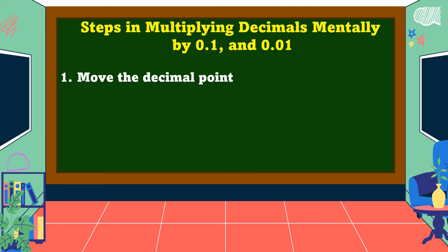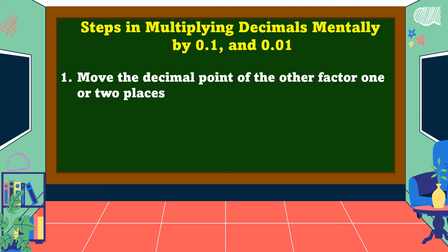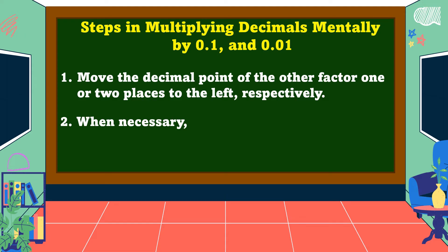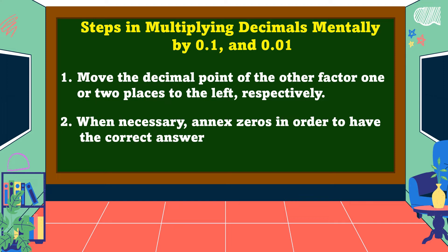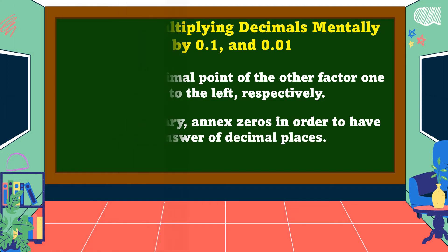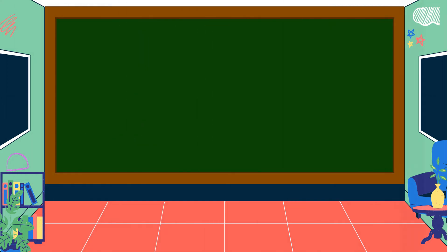Number one, move the decimal point of the other factor one or two places to the left, respectively. Number two, when necessary, annex zeros in order to have the correct number of decimal places. Let's study some examples.